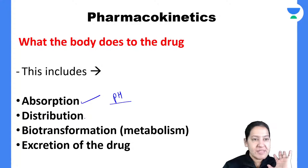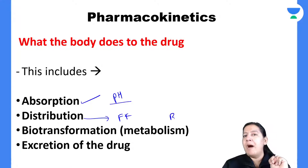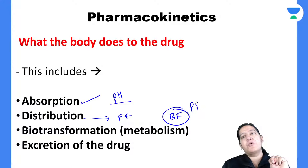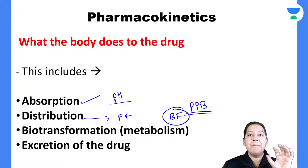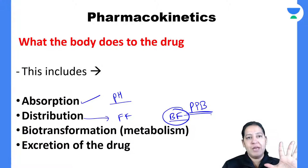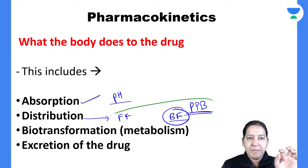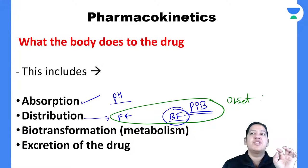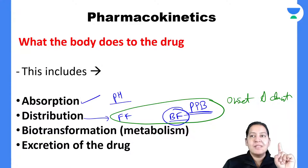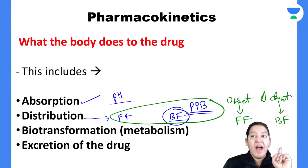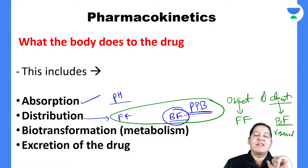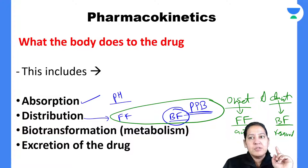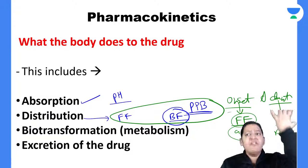We have started distribution and seen the two forms of the drug — the free form and the bound form. The bound form is plasma protein binding. It is the proportion of free and bound which decides the onset and duration of action. Onset is decided by the free drug and duration is decided by the bound form, because the bound form is the reservoir.